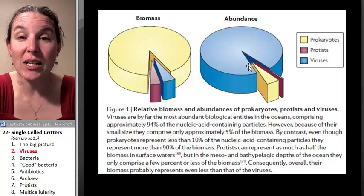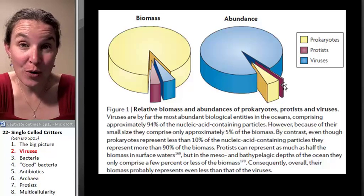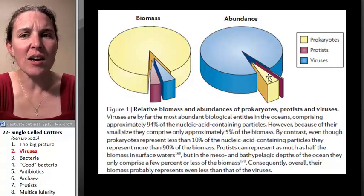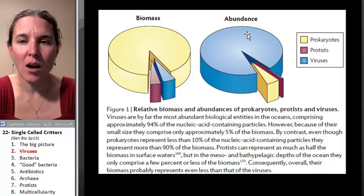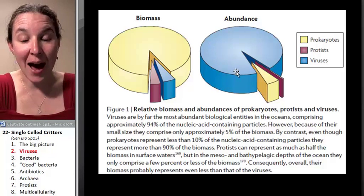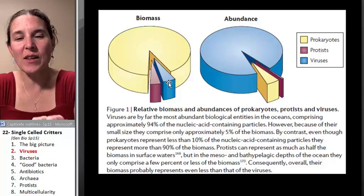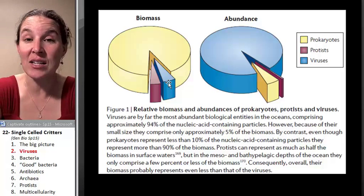However, when they counted up numbers, look at what happened. There's a tiny sliver of protists in the ocean, there's a decent-sized sliver of prokaryotes when you're just thinking numbers, and then what? Look at how many viruses are in the ocean. That's unbelievable. But there's that many, but they weigh that much. So hopefully that gives you an idea of the size of a virus. These guys are not big.